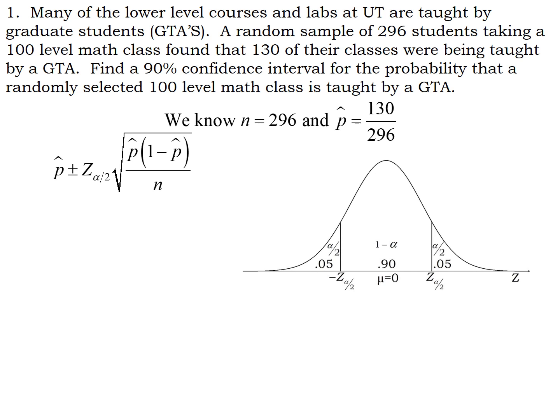So you're going to do a confidence interval. Draw the Z graph, area in the middle 0.90, 0.05 on each end. So inverse norm is going to find us a Z score of 1.645. The key is to draw the graph.